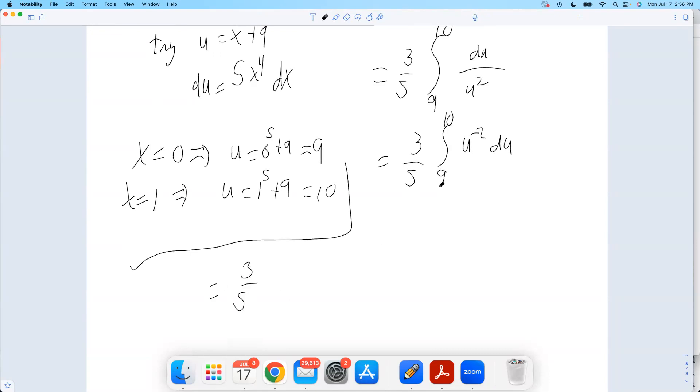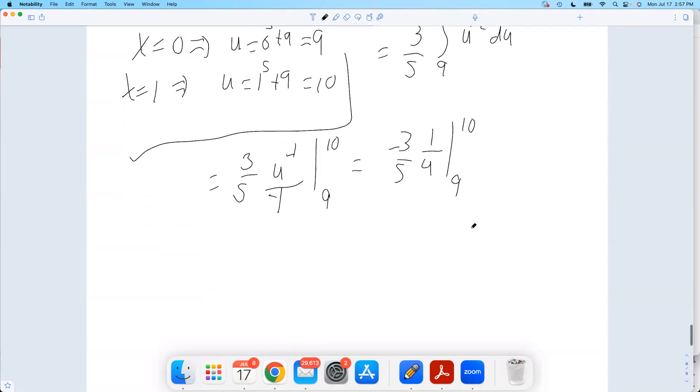That power is going to go up by one. Negative one plus two. Sorry. Negative two plus one would be negative one. Divide by the new exponent evaluated from nine to ten. So that's negative three fifths times one over u. That's what u to the negative one is evaluated from nine to ten. And now we plug in top minus plug in bottom.